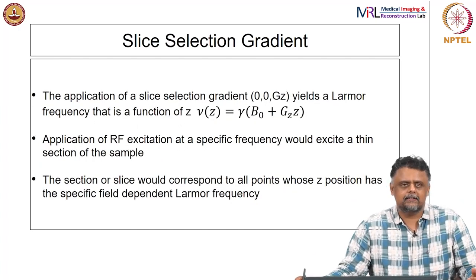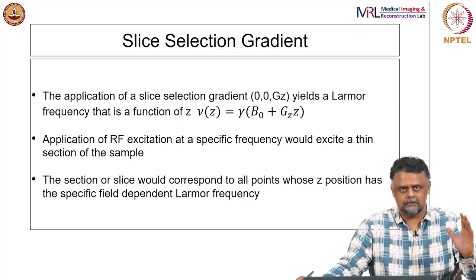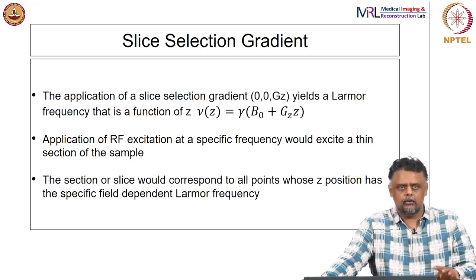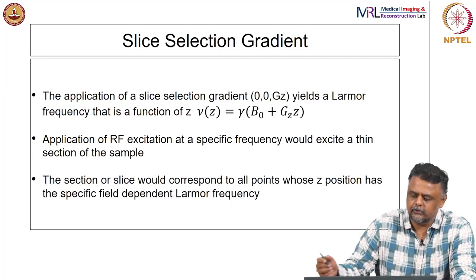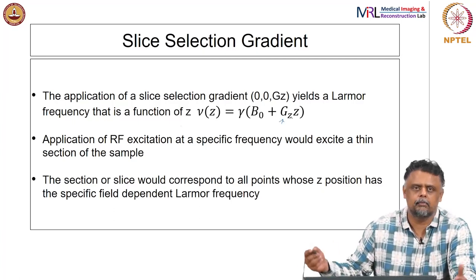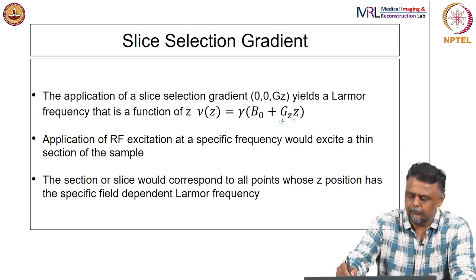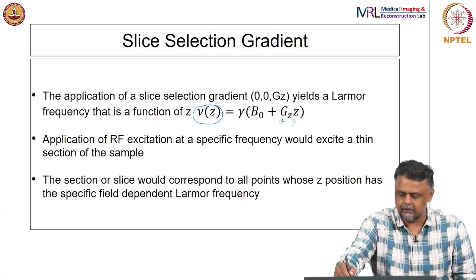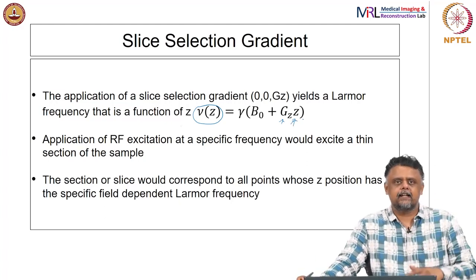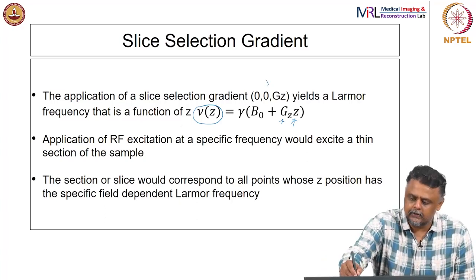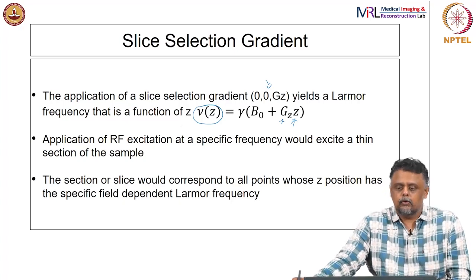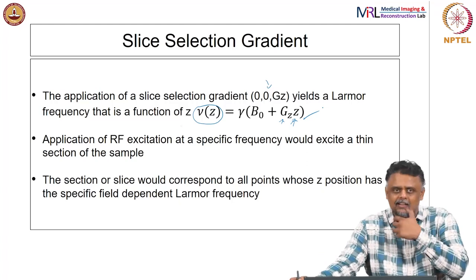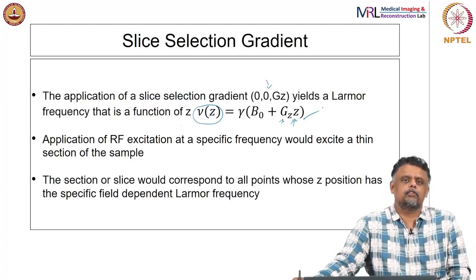We apply the slice selection gradient along the Z axis. The direction of the magnetic field is still along Z, but its magnitude is varied by the slice selection gradient. Once you apply a gradient Gz, the precession frequency becomes a function of Z: ω = γ(B0 + Gz·z). So by applying the Z gradient — with X and Y gradients off — the Larmor precession frequency becomes a function of Z, encoding frequency as a function of position.